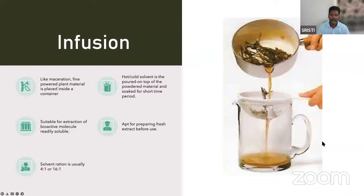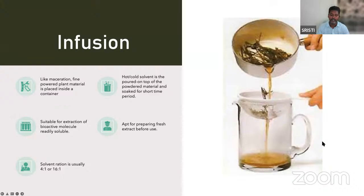The next method is infusion — similar to preparing tea or coffee. A finely powdered plant material is placed inside a container, and hot or cold solvent is poured on top and soaked for a short time. Readily soluble bioactive molecules are extracted by this method. This method can be used for preparing fresh extractions before use. The solvent ratio generally practiced is 4:1 or 16:1.